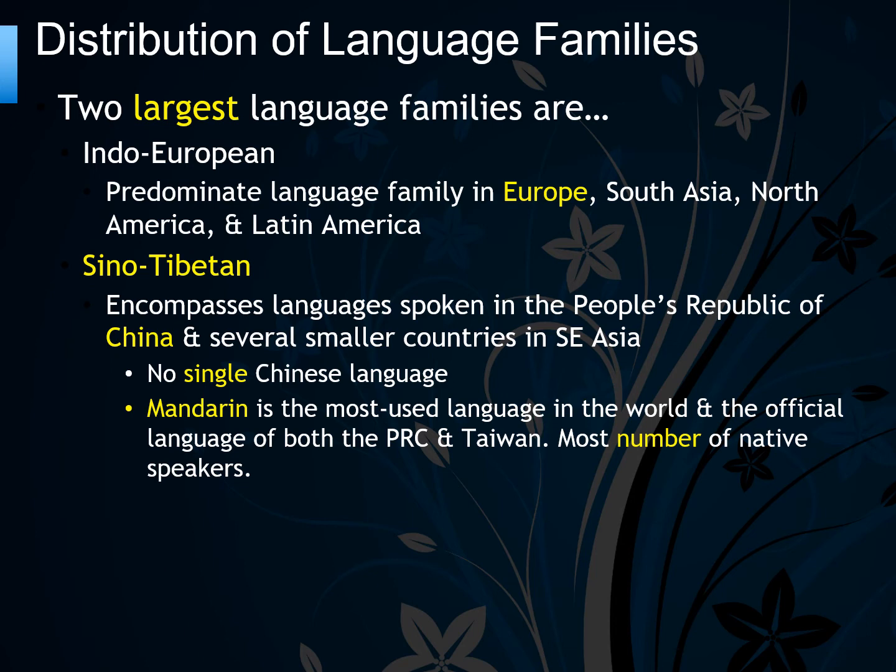The Sino-Tibetan language family is mainly in East Asia, with Chinese being the main language. There are five different dialects of Chinese, but Mandarin is the most used.